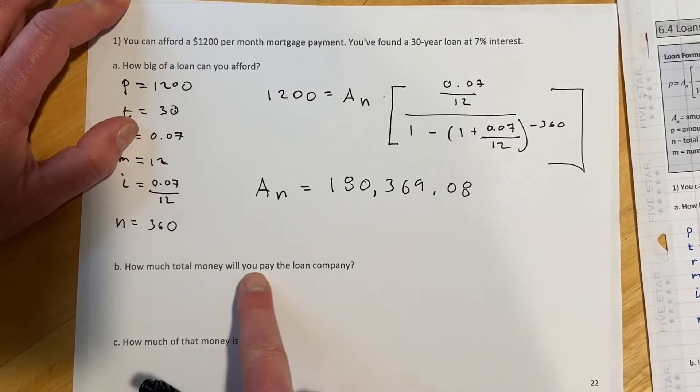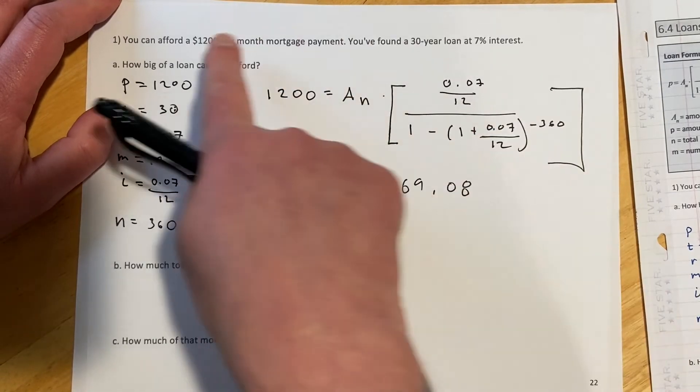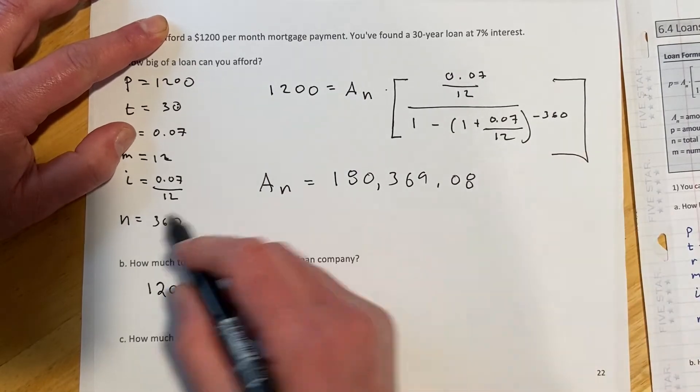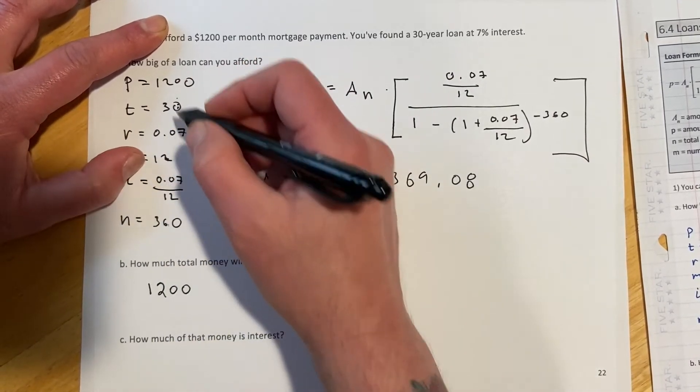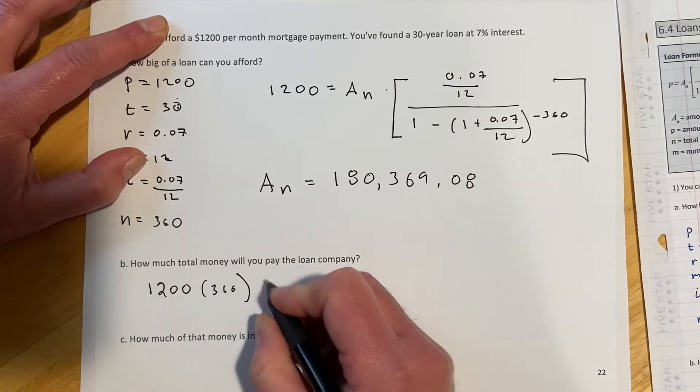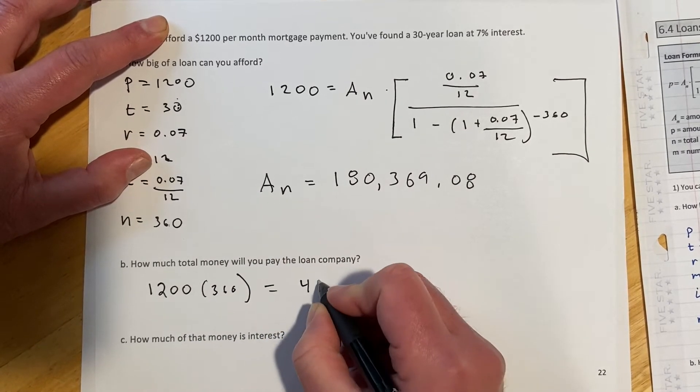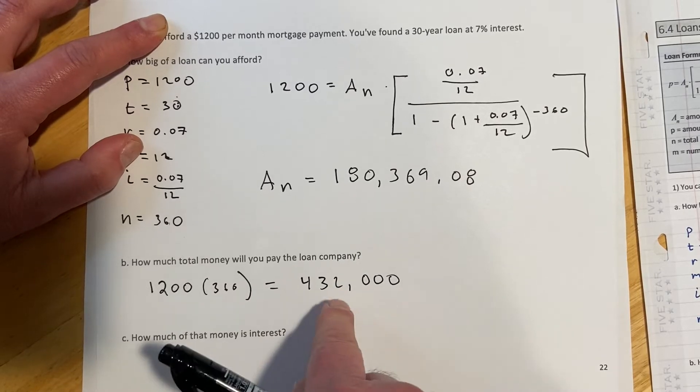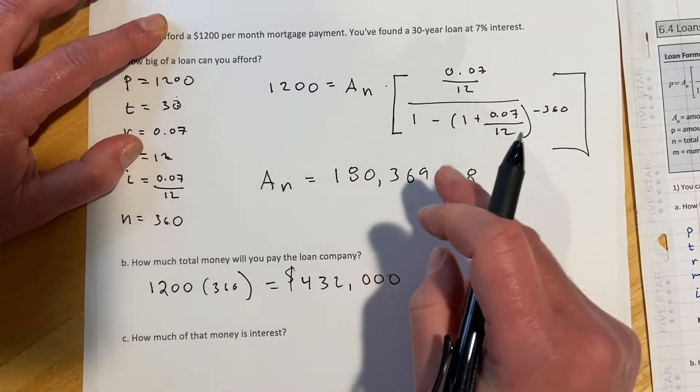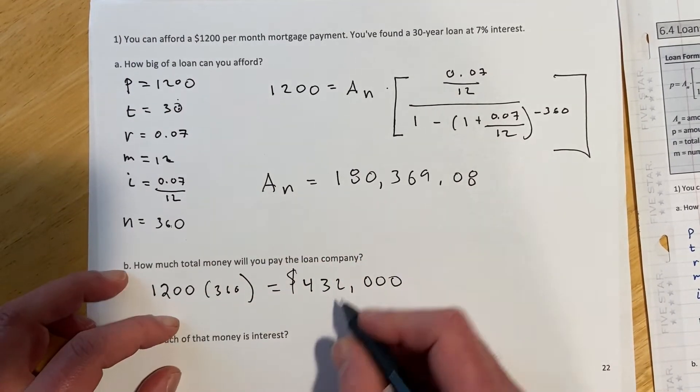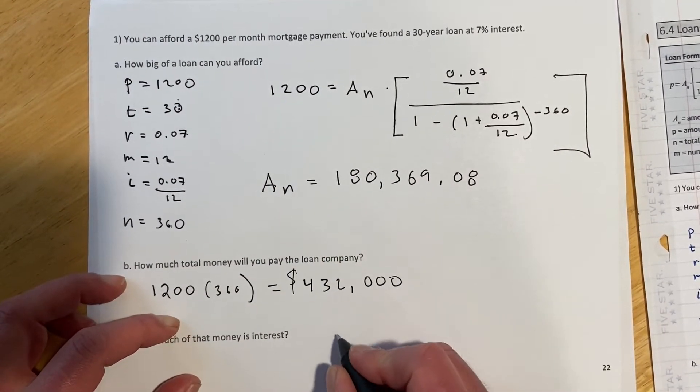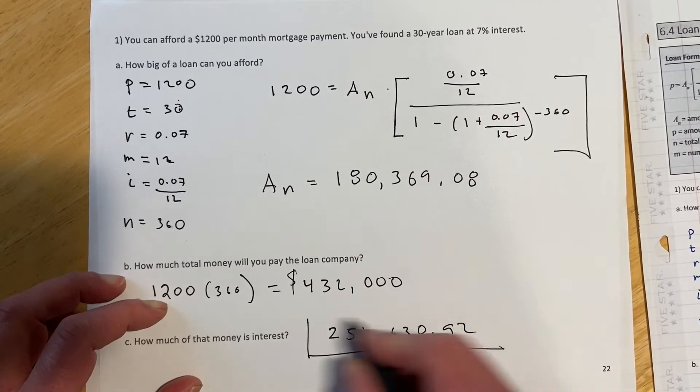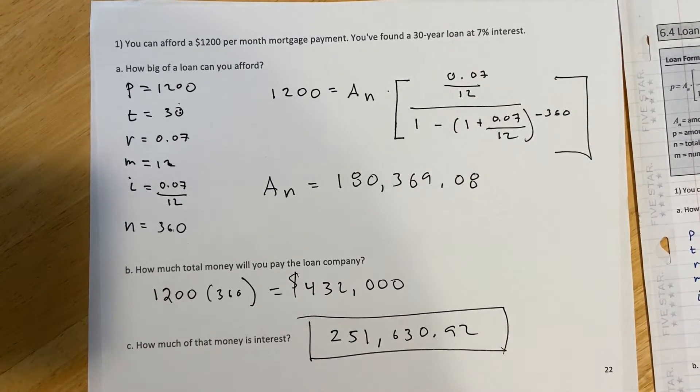Part B is how much total money will you pay the loan company? So if we look back, we're going to pay them $1,200 a month, and we're going to make 360 payments. That's that N, or you could just go 12 times 30, same thing. So the total amount is going to be $432,000. How much money is the interest? So you're paying them back $432,000. You're actually borrowing about $180,000. So if we do the $432,000 minus the $180,000, that comes out $251,630.92. So that's how much you're actually paying in interest on that house.